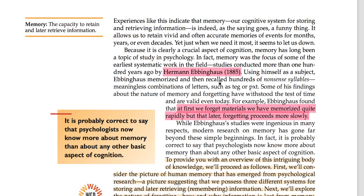Hermann Ebbinghaus worked on memory — he remembered some nonsense syllables which have no meaning. After that, he remembered the words again and saw how memory works and how we can forget. He had a learning curve. His major finding was that we forget very quickly at first, and then the process of forgetting slows down. So Ebbinghaus worked a lot on this, but it was a very simple study.